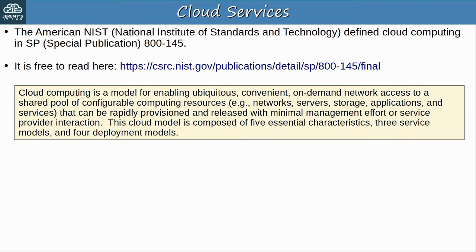When you're using Software as a Service, the service provider is basically in control of everything — from the physical data center, to the networks in the data center, to the servers, the operating systems on the servers, all tools running on the operating systems, and the applications themselves. The end user, the customer, simply uses the application, for example Excel running on Office 365, as provided by the service provider.